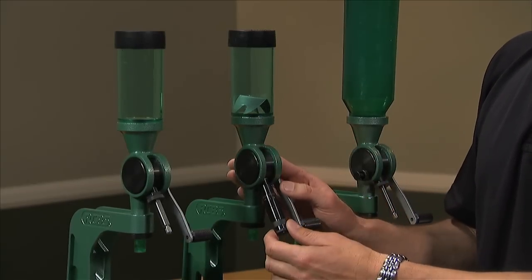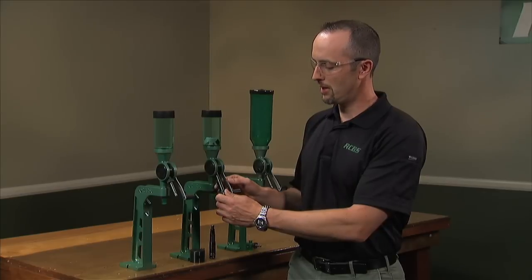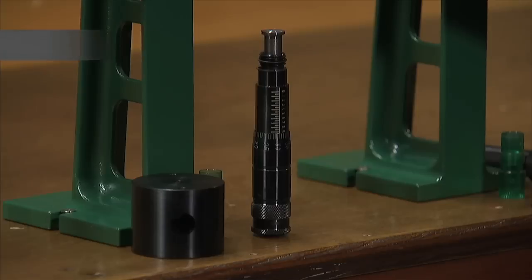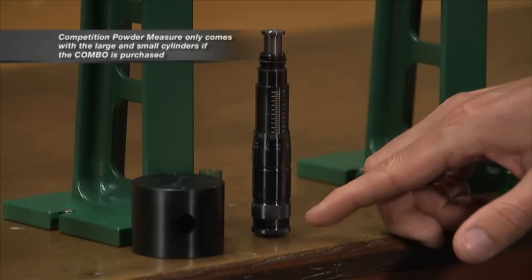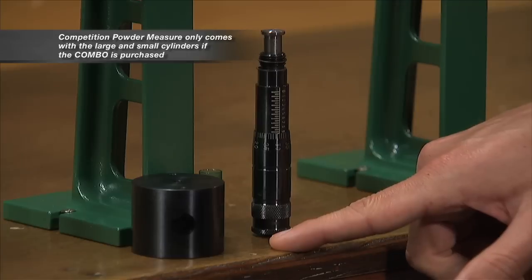It contains a micrometer adjustment for the metering screw to give you precise adjustment and easier reference for recording and later reusing. It also comes with both large and small metering screws and cylinders, small being more desirable for the pistol loader.